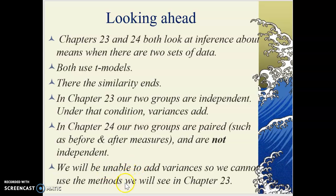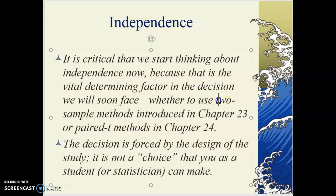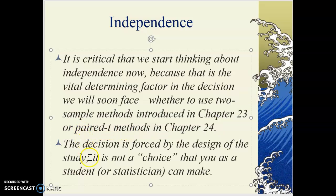For paired data, we'll be unable to add variances, so we can't use the methods we're learning in this chapter. Independence is critical — it's the vital determining factor in the decision we're going to face. Ultimately, we'll get all these kinds of problems presented at once and will have to decide whether Chapter 23 two-sample methods or Chapter 24 paired t-methods are appropriate. The decision is simply forced by the design of the study — it's not a choice you make.